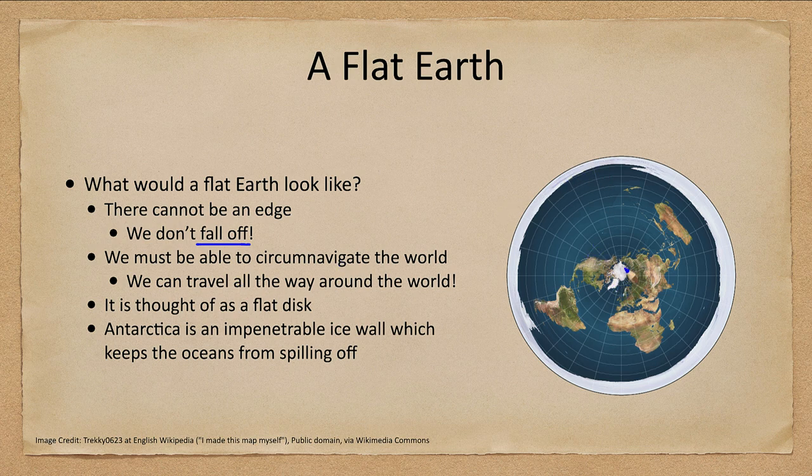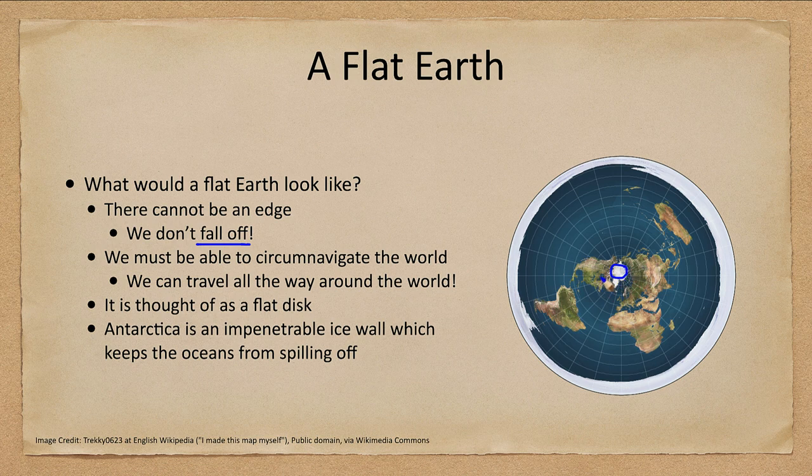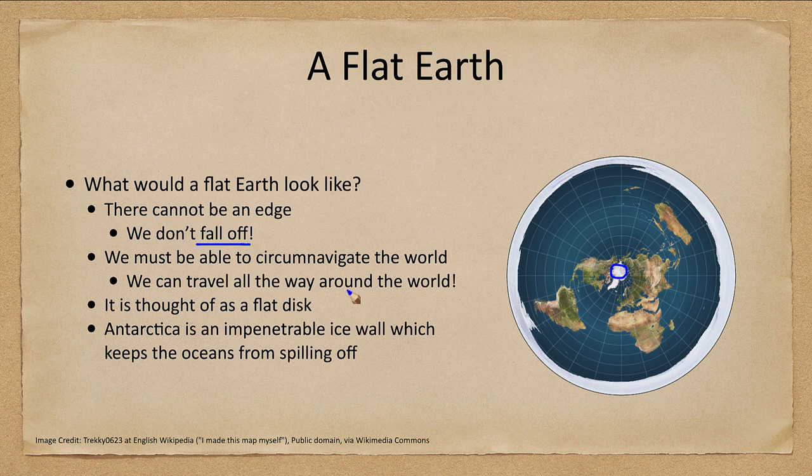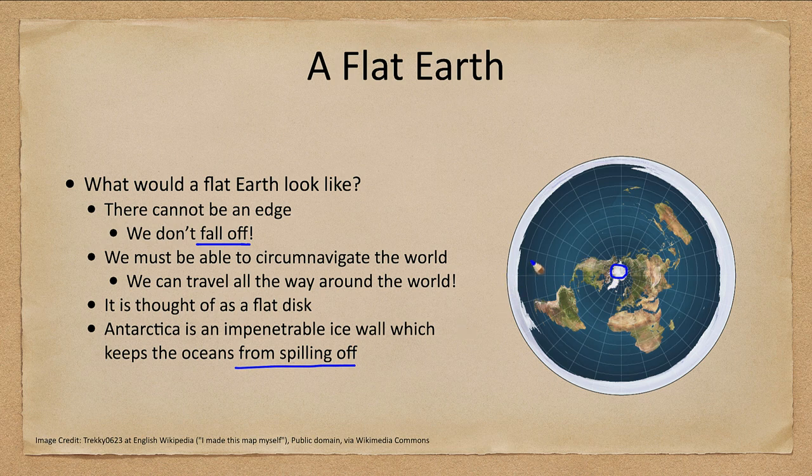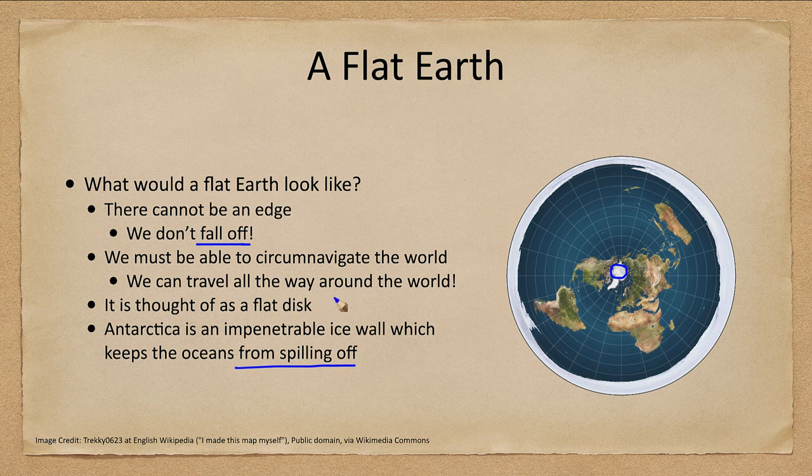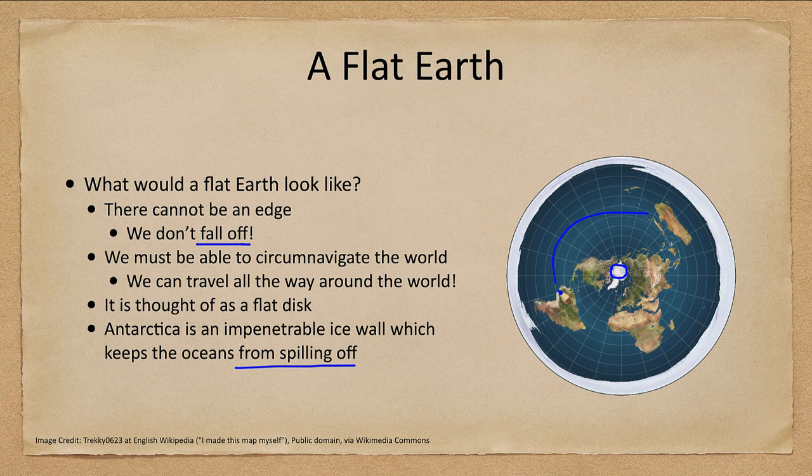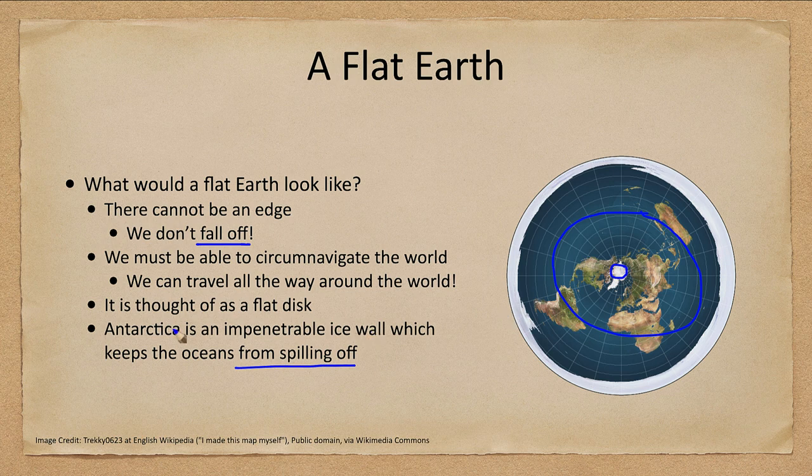We see the Earth here with the North Pole at the central region, and then the various continents are stretched out so that the Antarctic region becomes a great ice wall around the edge of the disk. What keeps the oceans from spilling off the edge of a Flat Earth is this impenetrable wall of ice. This is one way to be able to circumnavigate around the world without actually ever falling off or reaching an edge.